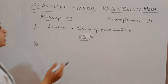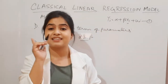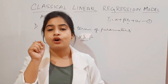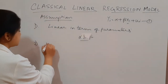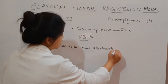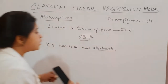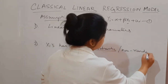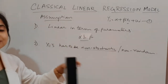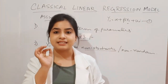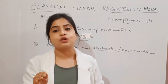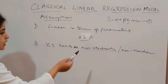Moving on to the second assumption. In our model, X is our regressor, and X has to be fixed for the particular sample we are considering — that means non-stochasticity. X has to be non-stochastic in nature, meaning non-random. X has to be non-random because if X changes, then we cannot get the exact value of our estimated variables, and the error terms will also get affected. That is why it is very important to have the regressors fixed — no stochasticity or randomness.